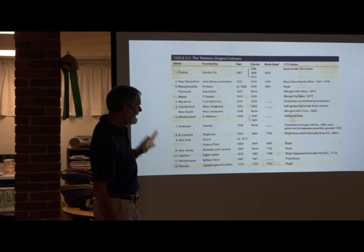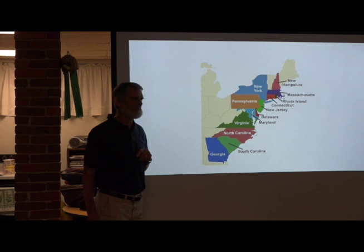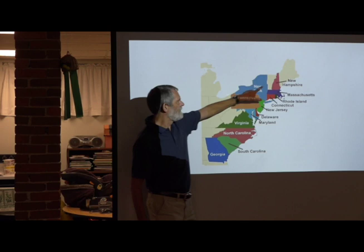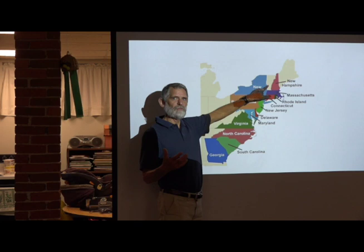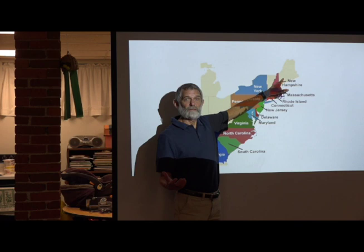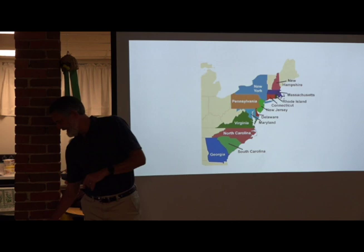What two New England states are not in the original 13? Vermont and Maine. Vermont was actually disputed land between New Hampshire and New York and became a state right after independence. Maine was actually part of Massachusetts and broke away in 1820 — which is another story for another time.